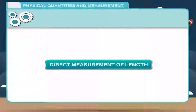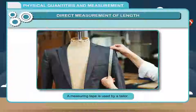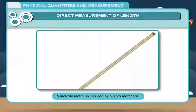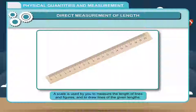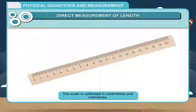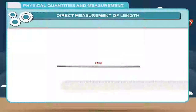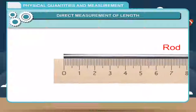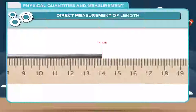Direct measurement of length: To measure the length, we need some measuring devices. For example, a measuring tape is used by a tailor; a metallic meter rod is used by a cloth merchant; a scale is used to measure the length of lines and figures. Normally, we use a meter scale or half-meter scale for measuring length. The scale is calibrated in centimeters and millimeters. To measure the length of a rod, the zero mark on the scale is set to coincide with one end of the rod, and the reading on the other end gives the length.